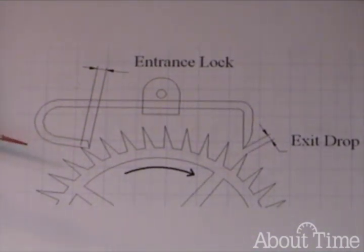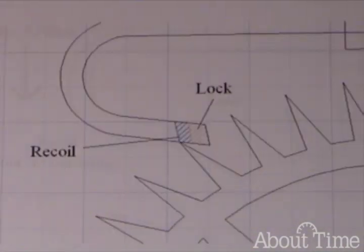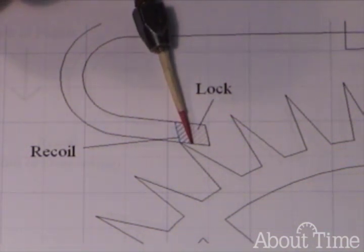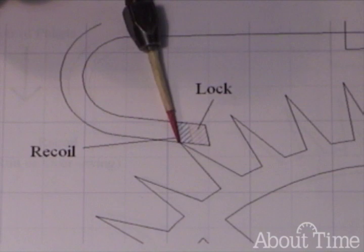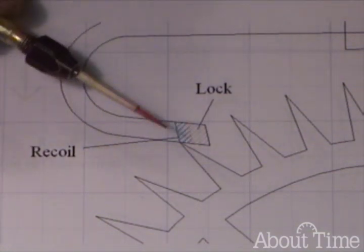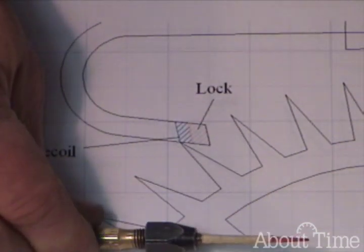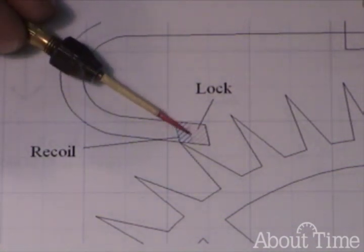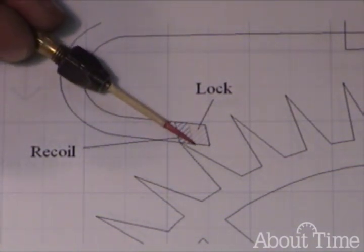So we're going to be talking a little bit about drops and locks. There's the lock, and then as the escapement runs, it recoils a slight bit. And the recoil has to do with the backing up of the escape wheel. You can see due to this angle, when the escape wheel tooth hits here,